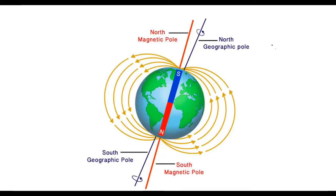You need to understand two things here. First, there is a geographic north and south pole of the Earth. The Earth also acts as a bar magnet, and thus there is a magnetic south and a magnetic north pole of the Earth. Wherever there is the geographic north pole, there is the magnetic south pole. As you can see, the south pole of the bar magnet on the Earth is pointing towards the geographic north pole.